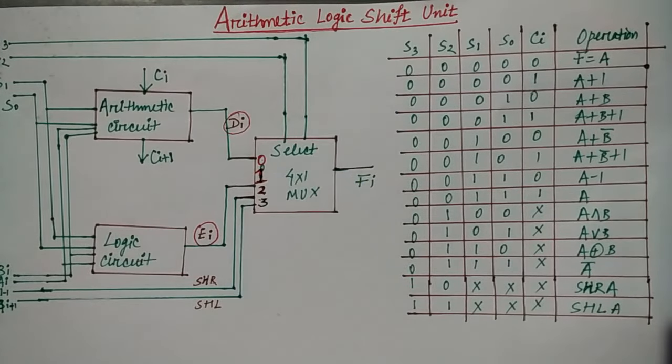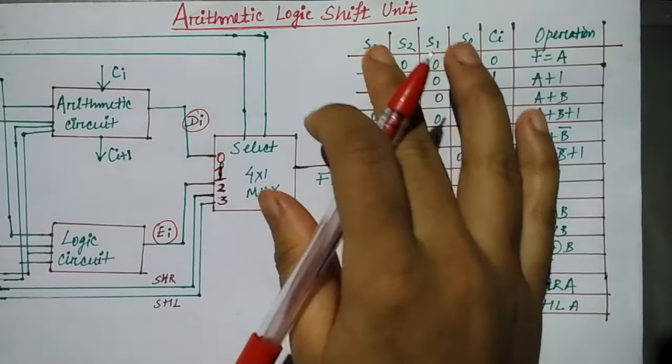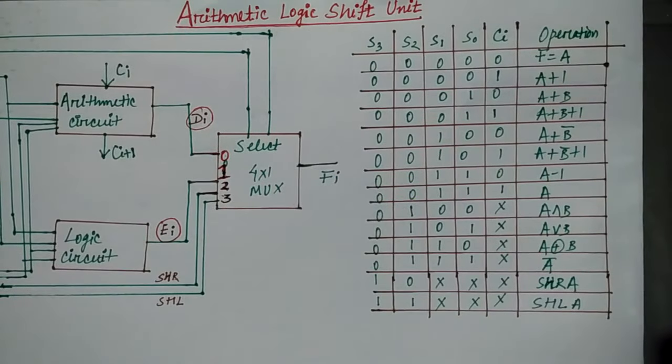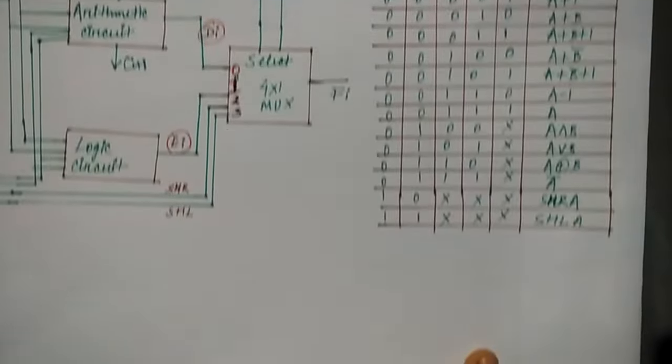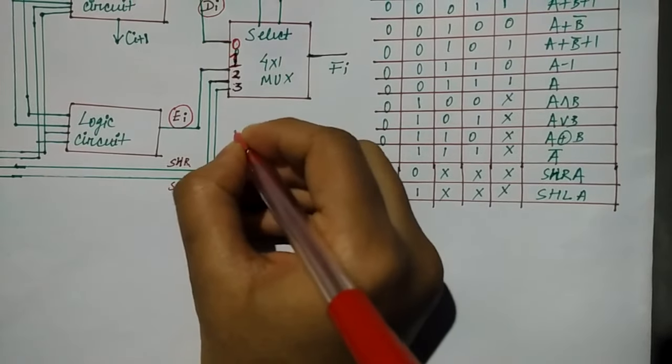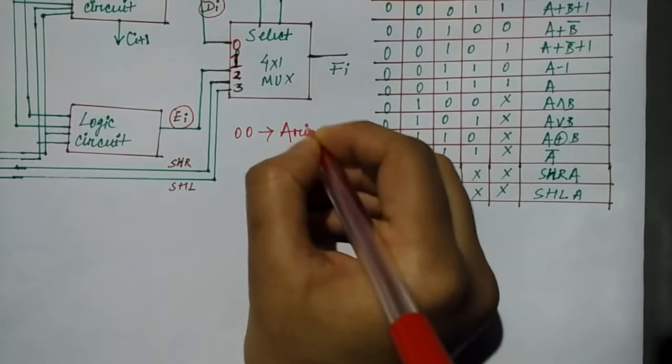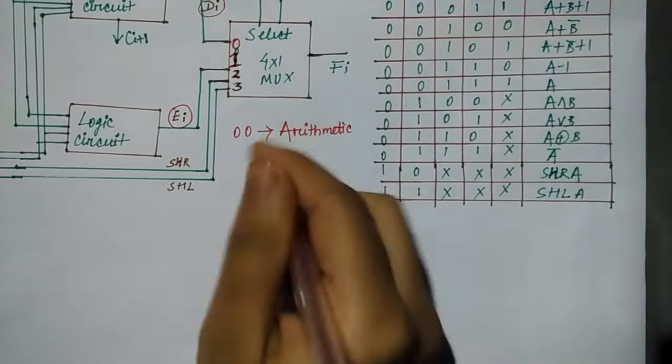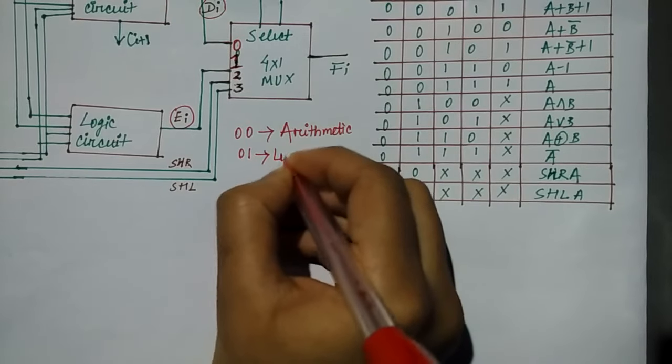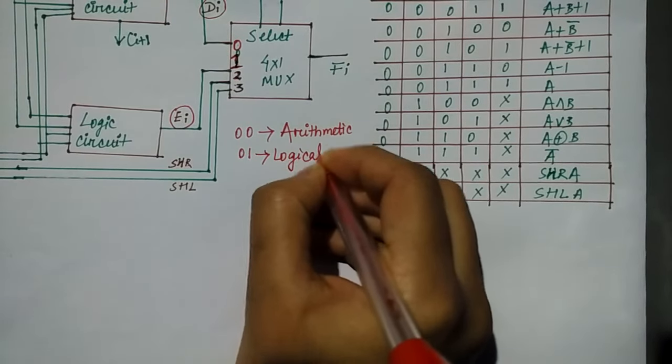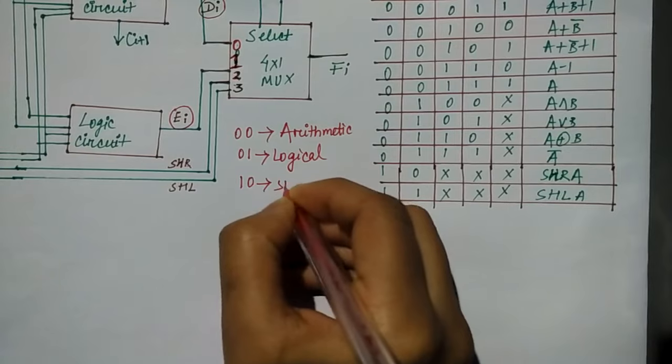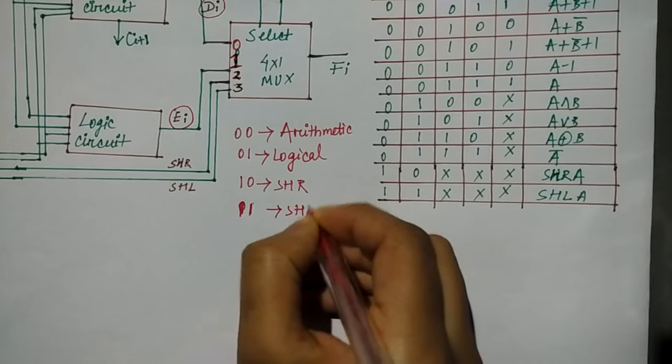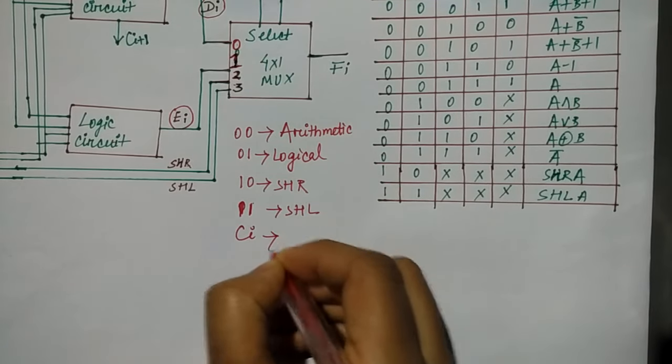This is the circuit, but now we will see by taking into consideration all the selection line and carry value, what are the operations. So first, 0,0 is considered for arithmetic. I will explain with this table. 0,1 is for logical, 1,0 is for shift right, 1,1 is for shift left. CI is for carry operation.